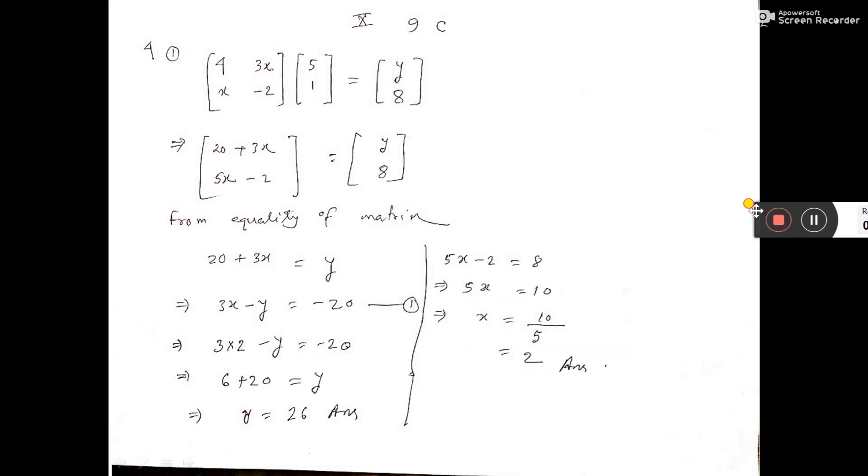This is the problem given: matrix [4, 3x; x, -2] multiplied by [5; 1] equals [y; 8]. We have to find x and y.